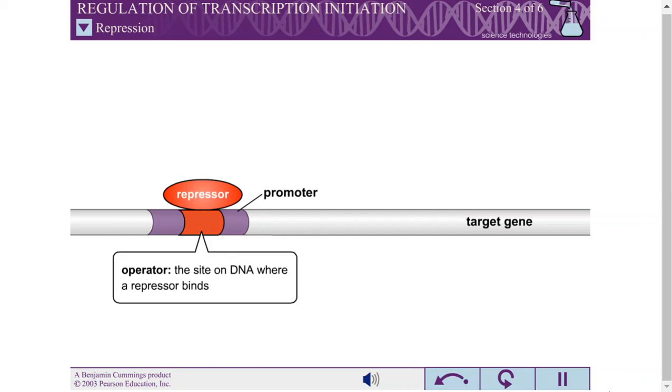Repressors often bind to a site on the DNA which overlaps the region bound by the RNA polymerase. When a repressor is bound, the RNA polymerase is unable to bind, thus decreasing or eliminating RNA expression.